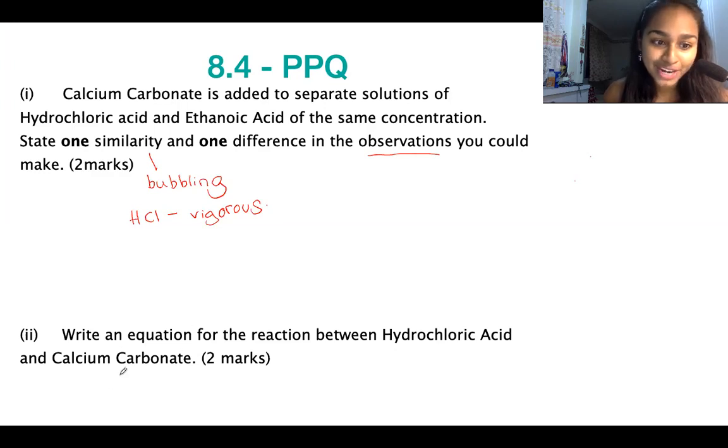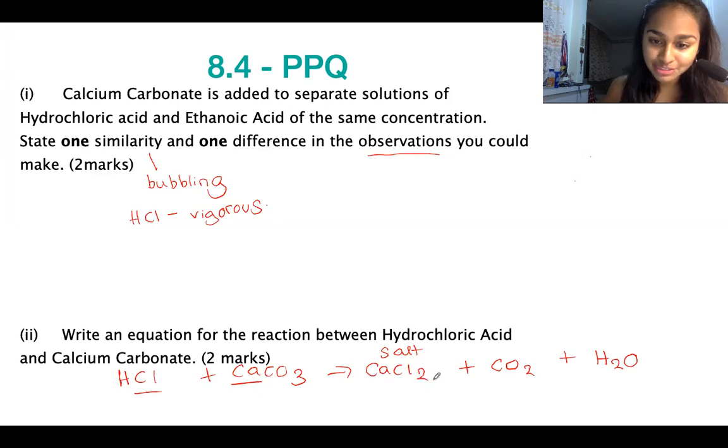Let's see this question through. Write an equation for the reaction between hydrochloric acid and calcium carbonate. I know that I'm going to make a salt, and then I'm going to make carbon dioxide, and I'm going to make water. My salt is always a metal and a non-metal, so CaCl2 to balance out the charges. And because I've got two chlorines here, I'm going to put a 2 in front of my HCl over there. And that's going to be my balanced reaction.